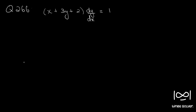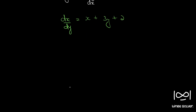So if you rearrange, you can write dx by dy is equal to x plus 3y plus 2, or dx by dy minus x is equal to 3y plus 2.